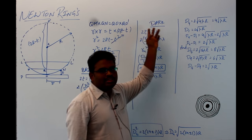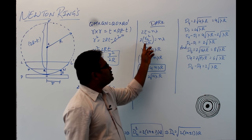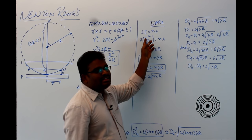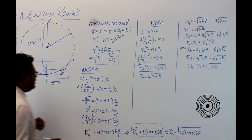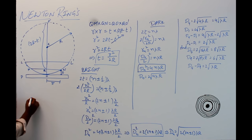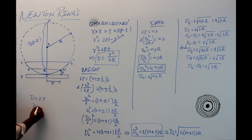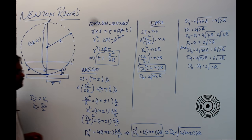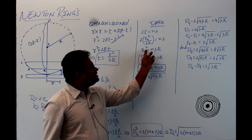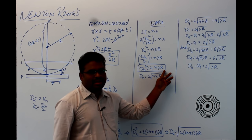For the dark fringe condition 2t = n lambda, substituting t = rₙ²/2R gives rₙ² = nλR. Since diameter equals 2 times the radius, rₙ = Dₙ/2, and substituting gives Dₙ² = 4nλR. So using these expressions, one can calculate the diameter of both bright and dark rings.